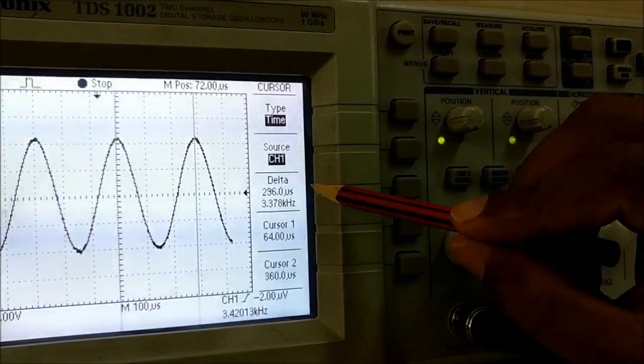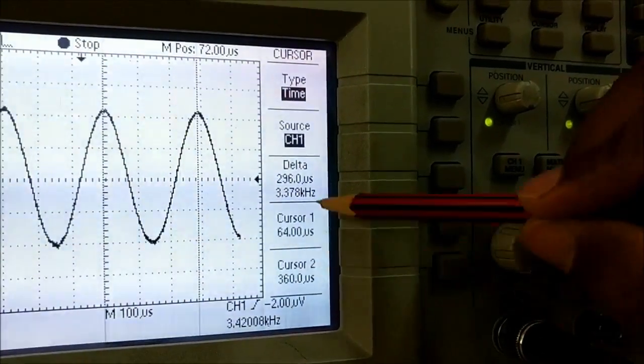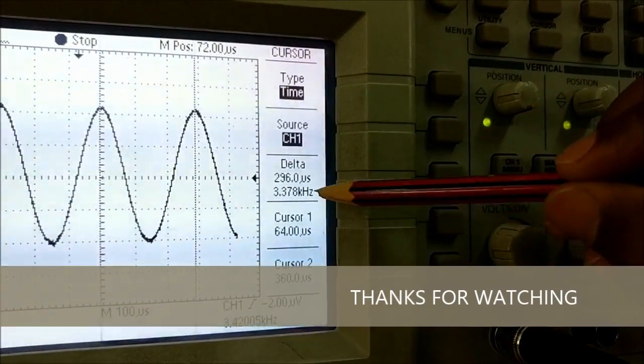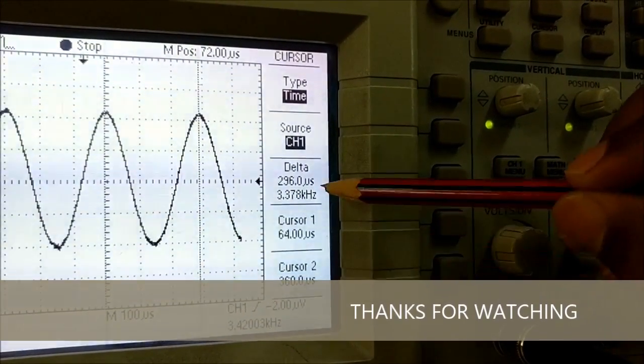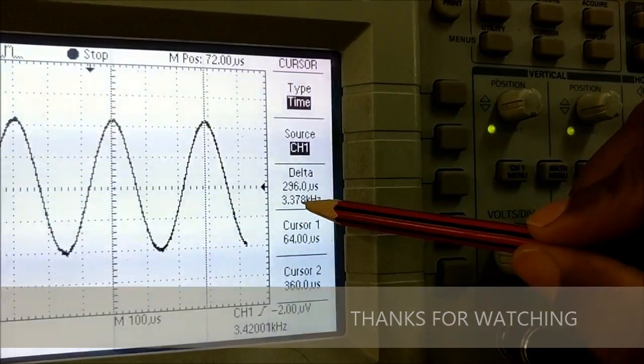One cycle is the difference of cursor 1 and cursor 2 in microseconds. This is the time domain. The difference is given in the form of delta. The frequency is 3.378 kHz.